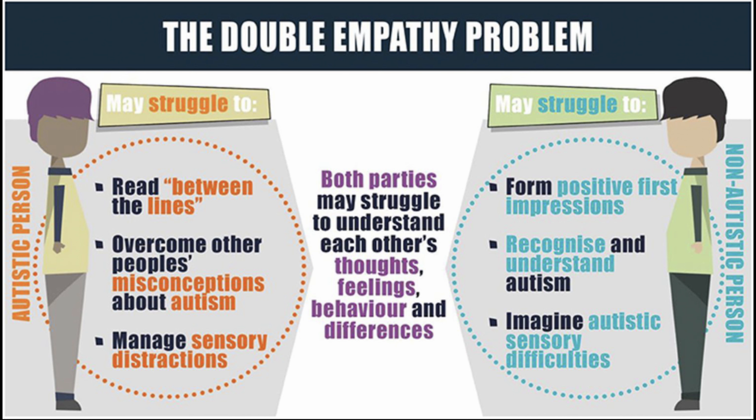The double empathy problem is a theory brought up by Dr. Damian Milton. He came up with this to outline that both people with shared experiences communicate effectively through a shared empathy. People with a different experience have divergent empathies and different communication skills due to the double empathy problem. This disproportionately impacts those in the neurominority because they are in the minority.